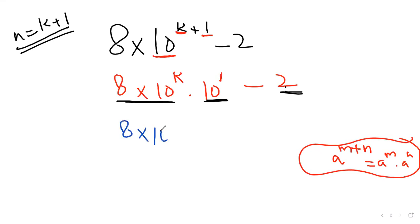8 into 10 to the power k times 10. This 10 is giving us a clue. Like minus 2, if you're writing at the corner you can write it down. This 10 is giving you an idea: 10 into 2 plus 10 into 2.